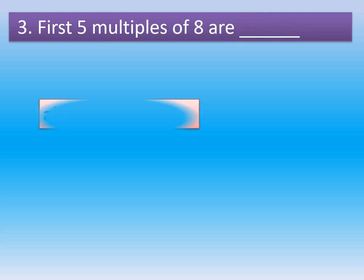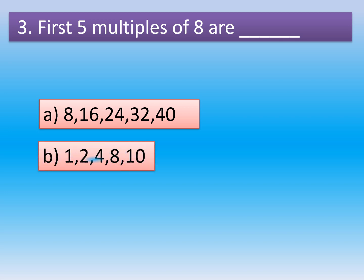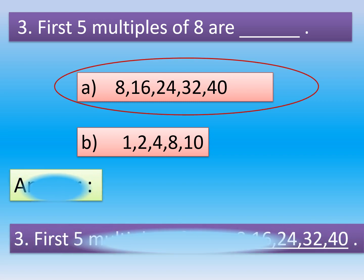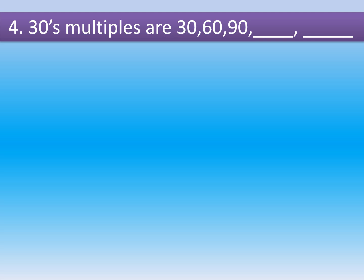Question number 3: First 5 multiples of 8 are dash. Option A, 8, 16, 24, 32, 40. Option B, 1, 2, 4, 8, and 10. The correct option is Option A. Question number 4: 30's multiples are 30, 60,